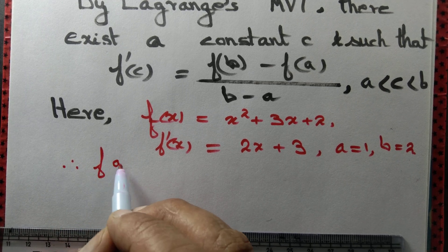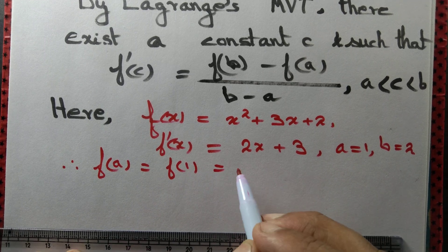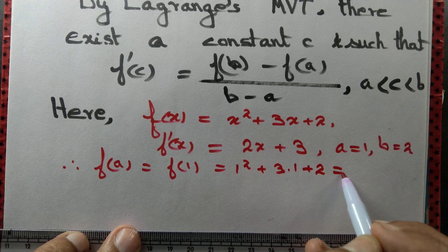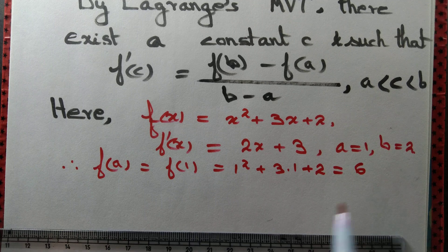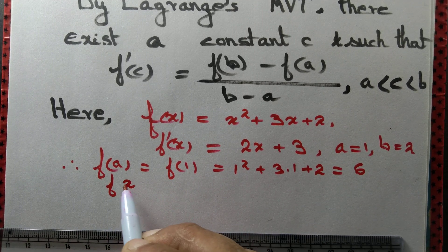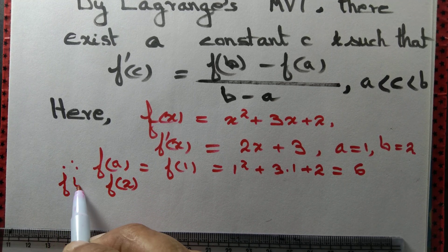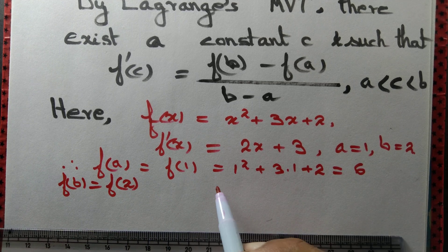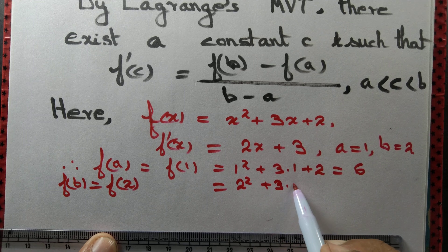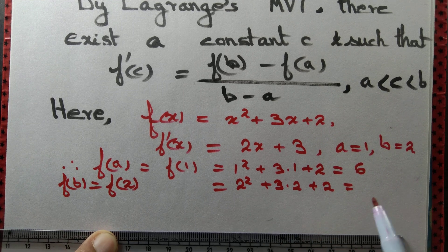Therefore, f(a) = f(1) = 1² + 3×1 + 2 = 1 + 3 + 2 = 6. And f(b) = f(2) = 2² + 3×2 + 2 = 4 + 6 + 2 = 12.